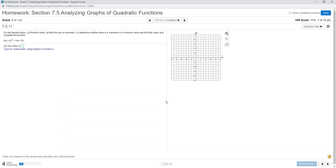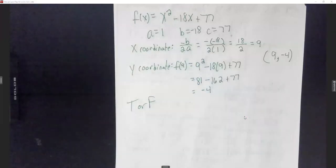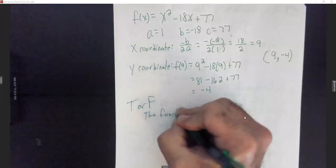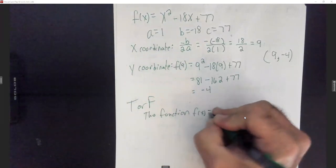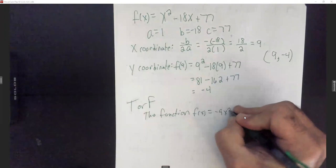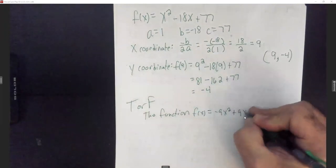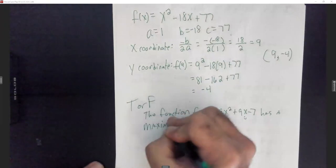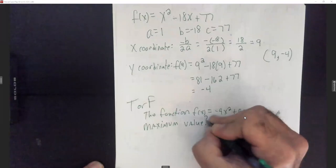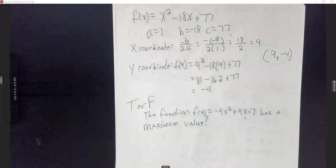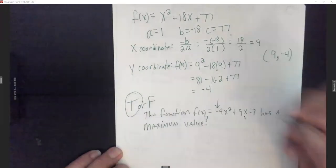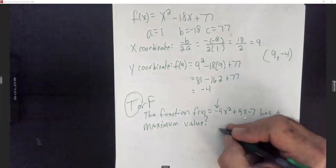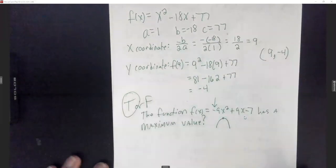True or false: the function f(x) = −9x² + 9x − 7 has a maximum value. That's true, because we said if that first term — the x-squared term — is negative, it flips that parabola over. And when it flips over, you definitely have a maximum.